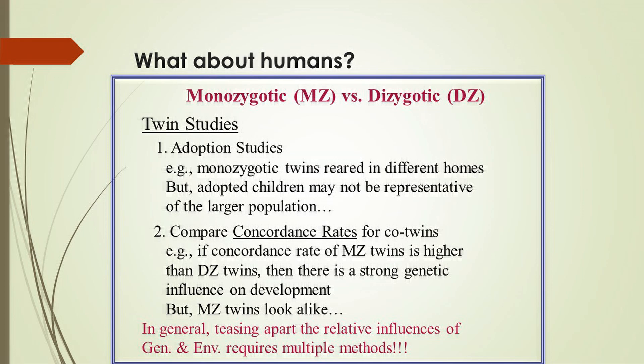One type of twin study is referred to as an adoption study. Here researchers look around the world for monozygotic or identical twins who were raised in different homes. For naturally occurring reasons, they were separated at birth and raised in different environments. If you compare these twins, they have the same genetic material but different environments, and you can learn something about the relative influence of genetic inheritance and environment on the development of behavior.